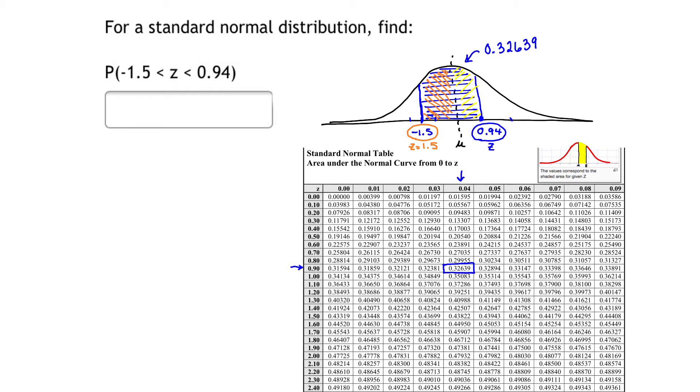Looking on our chart, we have 1.5 and 1.50. We take the intersection of the horizontal row at 1.5 and the vertical column at 0.00. That area for the orange band is 0.43319.